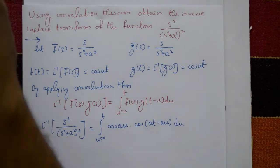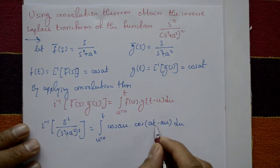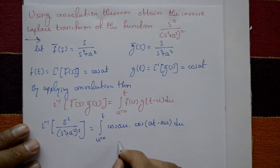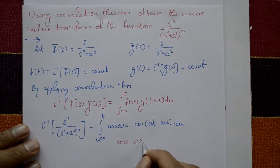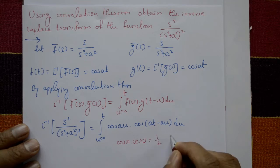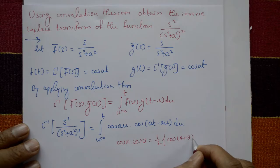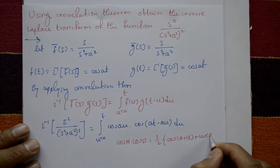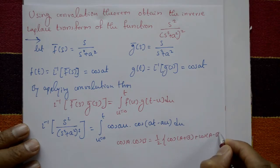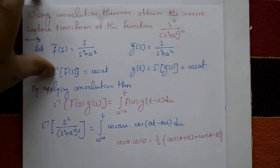Now using the standard formula: cos A · cos B = (1/2)[cos(A + B) + cos(A − B)].